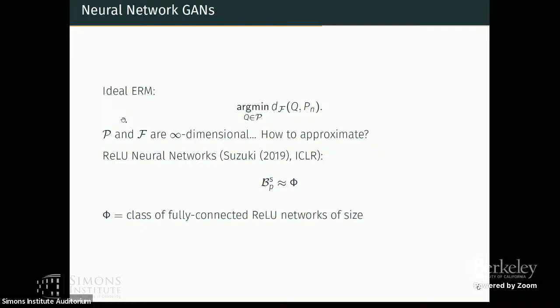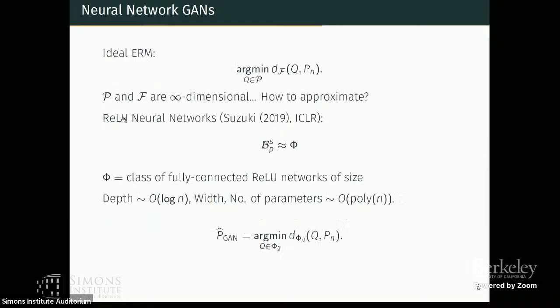And so what we used in our work was the fact that you can use real neural networks, so fully connected networks, to approximate Besov spaces really well. And so what we do is that we plug in these networks for these two infinite dimensional function spaces. So I can construct neural networks of depth log n and other parameters only polynomial and replace them here, and then construct the GAN estimate over this generator and discriminator.